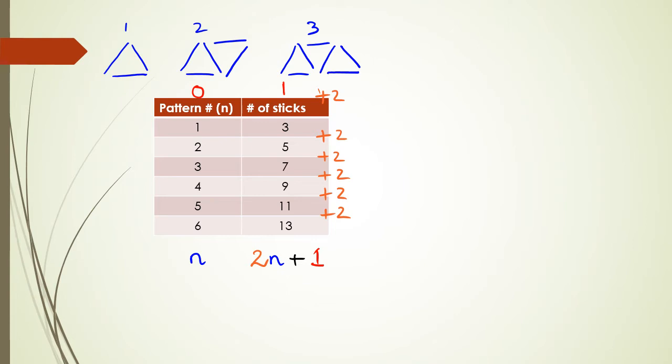We actually write this general equation as 2, which is this 2 here, 2 multiplied by n plus the 1 that we had right at the top when it was equal to 0. Now this looks very similar to y equals mx plus c, and I will talk about this in a couple of videos from now. But basically, this is how you come up with the number of sticks for the nth pattern. So we have 2n plus 1.